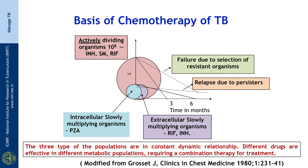Why is it important to know? Anti-TB drugs act only when a bacterium is dividing. It is easier to kill the larger population which is actively dividing, and the drugs most effective there are rifampicin, INH, and streptomycin — INH being the most potent.